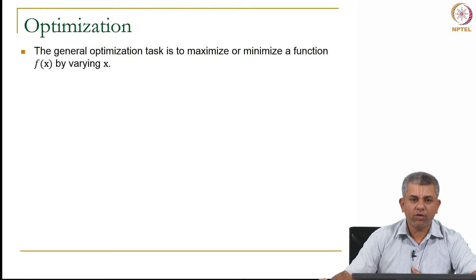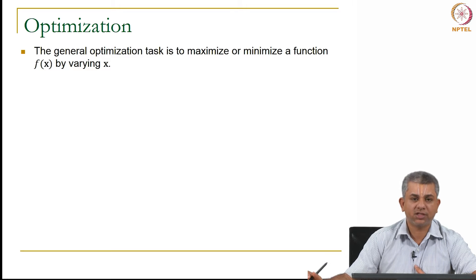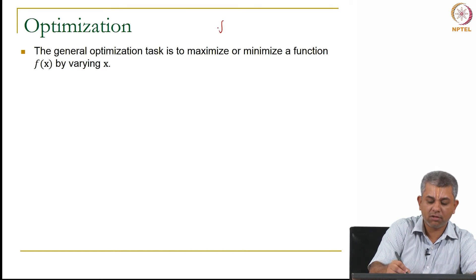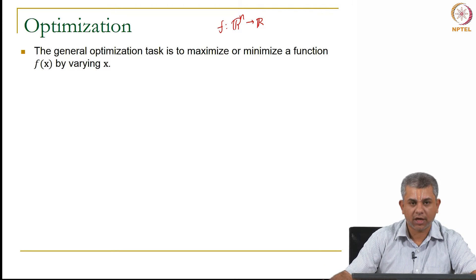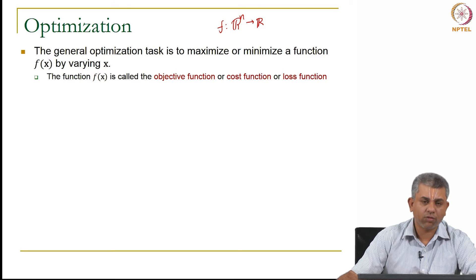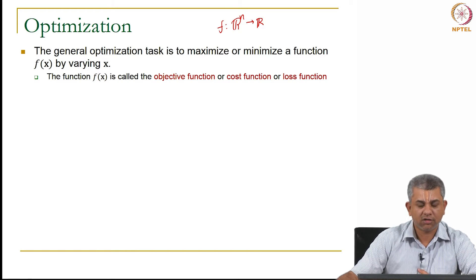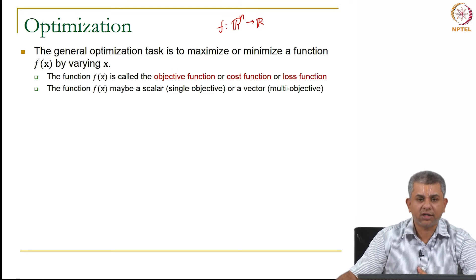So typically what you try to do in a general optimization task is to maximize or minimize a function. Once again like in the previous videos, this function can be something that takes in a vector and gives out a scalar. The function that you are trying to maximize or minimize is called an objective function or a cost function or a loss function. So this terminology is used interchangeably.